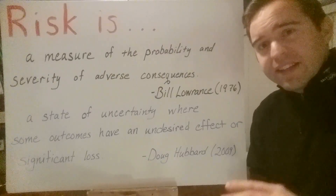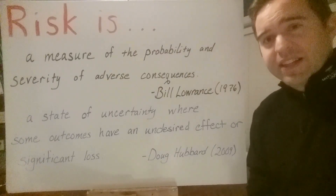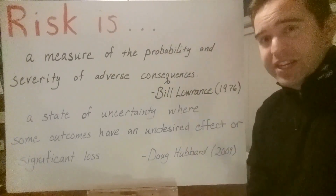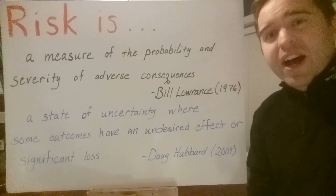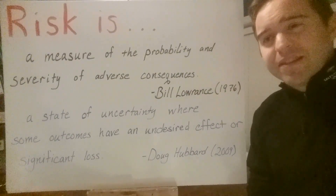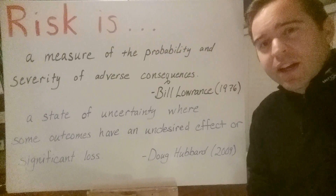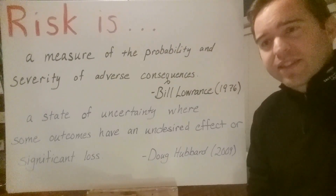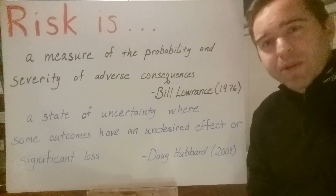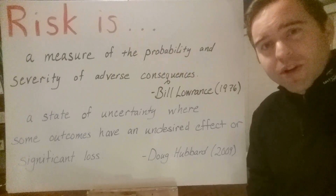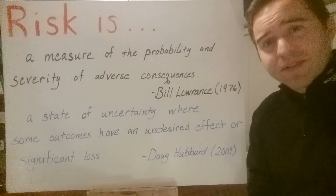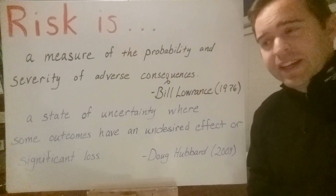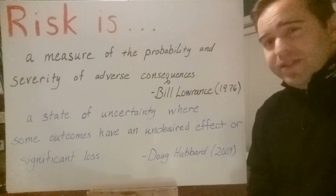There are at least three themes. The first is that risk is a measure. It means we can differentiate between high and low risk — that there's a quantitative scale or qualitative rubric that helps us discriminate between what is bad risk and what is good risk, if there's such a thing.